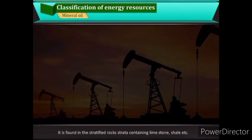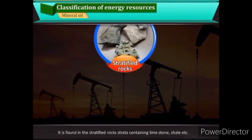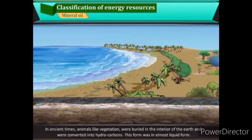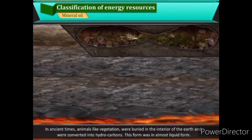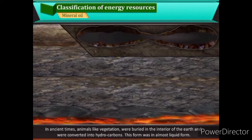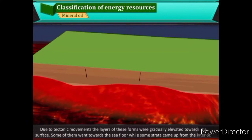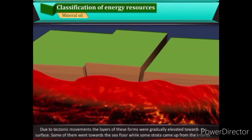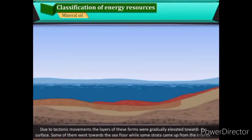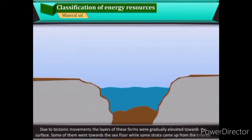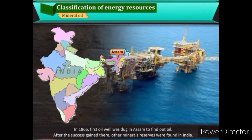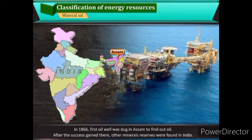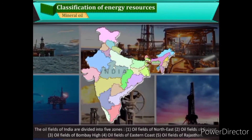Mineral oil is found in stratified rocks containing limestone, shale, etc. In ancient times, animals and vegetation were buried in the interior of the earth and converted into hydrocarbons in almost liquid form. Due to tectonic movements, these layers were gradually elevated towards the surface. In 1866, the first oil well was dug in Assam; after this success, other mineral reserves were found in India. The oil fields of India are divided into five zones.